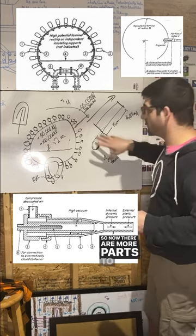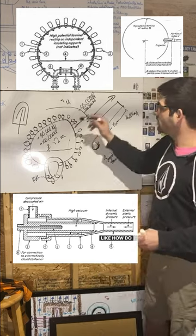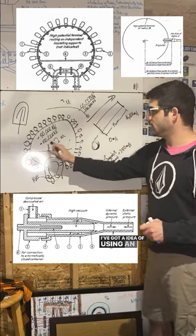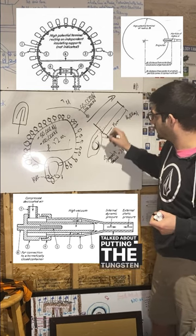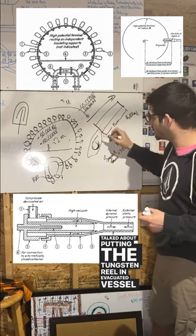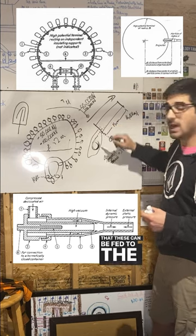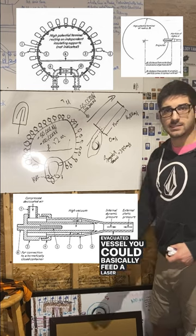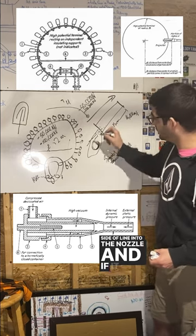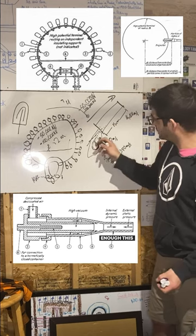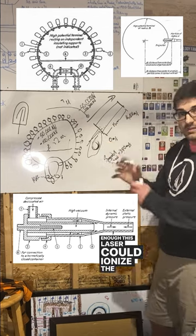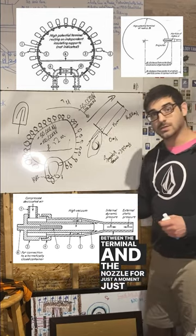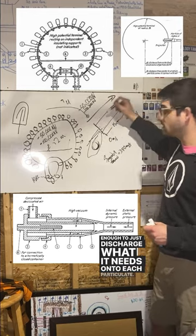So now, there are more parts to functionally make it work. Like, how do you feed this connection between here and here without discharging it? I've got this idea of using an evacuated tube, because Tesla talks about putting the tungsten reel in an evacuated vessel, so that these can be fed to the nozzle in a vacuum. In this evacuated vessel, you could basically feed a laser down the line into the nozzle, and if it was just evacuated enough, this laser could ionize the evacuated space just between the terminal and the nozzle for just a moment, just enough to discharge what it needs onto each particulate.